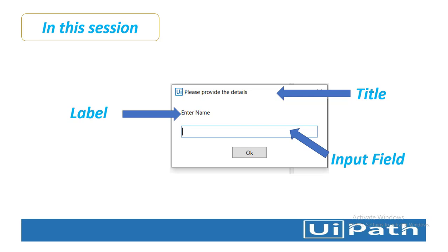In this session I'm going to explain how to use Input Dialog to provide values to the robot, how to use the same Input Dialog as a password field so that characters are not displayed as typed, and how the same Input Dialog can be used as a radio button as well as a combo box.